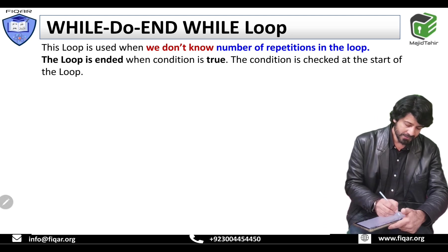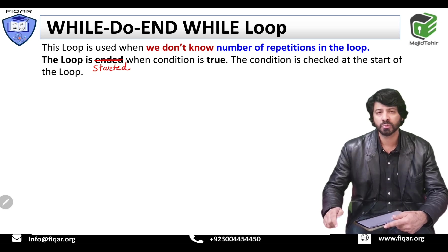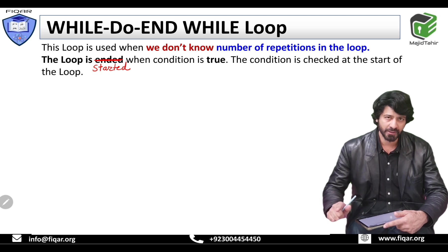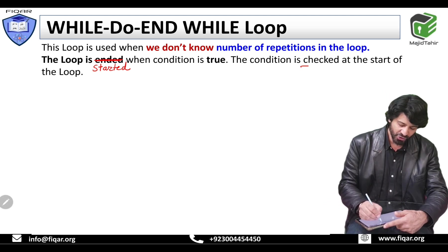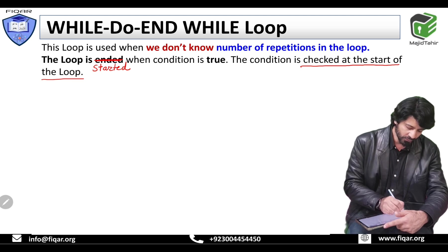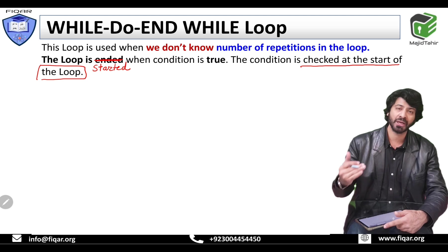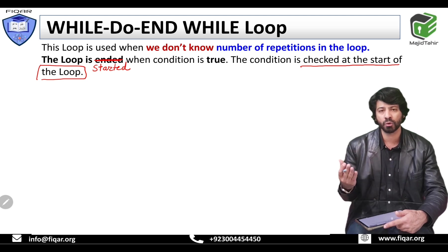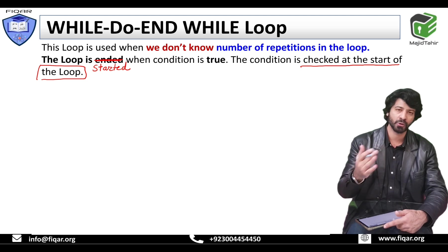There was a mistake, so I am writing the corrected thing. The loop is started when the condition is true. The condition is checked at the start of the loop. If the condition is true, the program goes into the loop. If the condition is not true, it skips the loop and goes out of the loop.